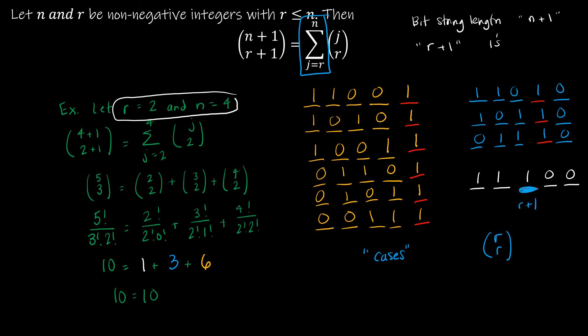If this guy is a 1, then I still have r ones left over and I only have r spaces to the left of that. So this case is r choose r. And that's over here in white.